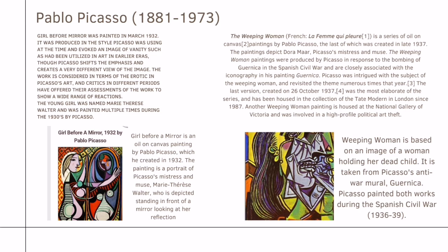The second picture is The Weeping Woman, a series of oil on canvas paintings by Pablo Picasso, the last of which was created in late 1937. The paintings depict Dora Maar, Picasso's mistress and muse. The Weeping Woman paintings were produced in response to the bombing of Guernica in the Spanish Civil War and are closely associated with the iconography in his painting Guernica. Picasso revisited the theme numerous times that year. The last version, created on 26th October 1937, was the most elaborate of the series and has been housed at the Tate Modern in London since 1987.